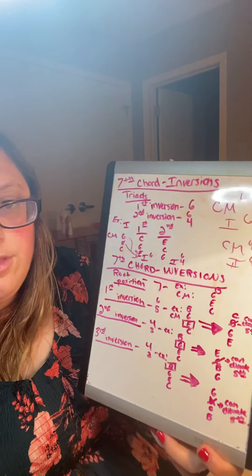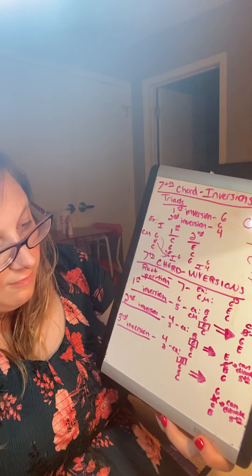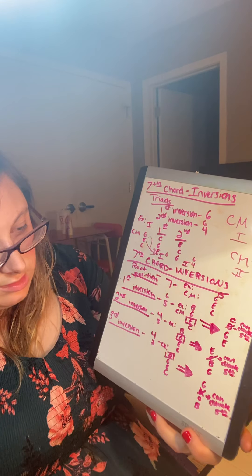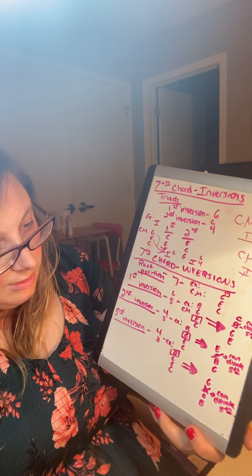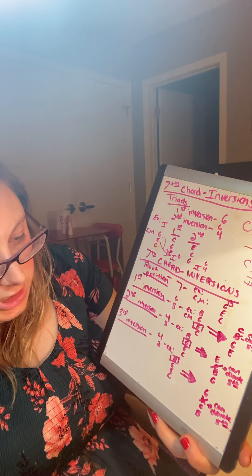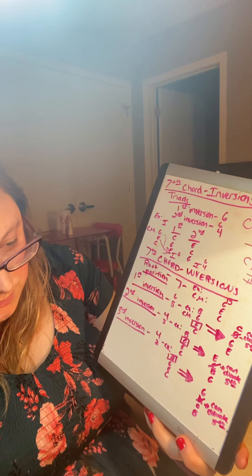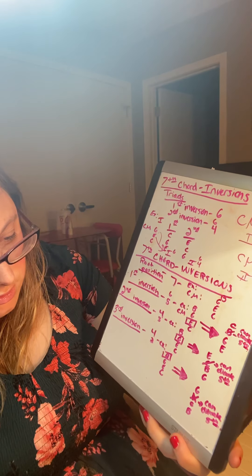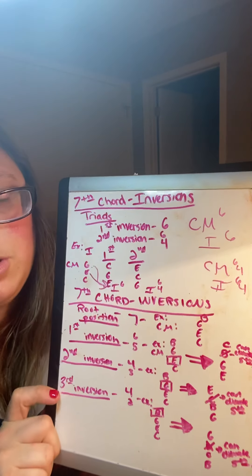So here's all the inversions of C major. You have C major seven. First inversion. Oh, sorry. Good. Now second inversion. And then third inversion. Right? So it's different inversions.